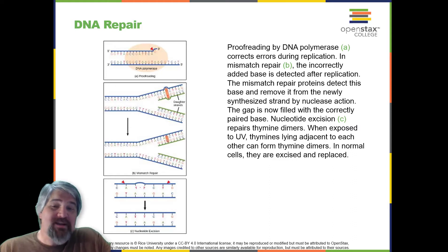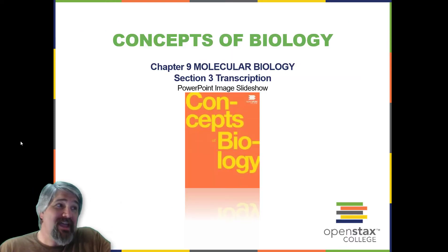Most mistakes are corrected. If they are not, they may result in a mutation, defined as a permanent change in the DNA sequence. Mutations in repair genes may lead to serious consequences, like cancer. On that note, we come to the end of Section 2, DNA Replication. Join me next time for Section 3, Transcription.